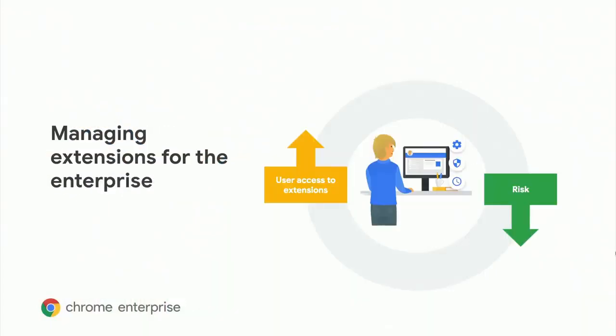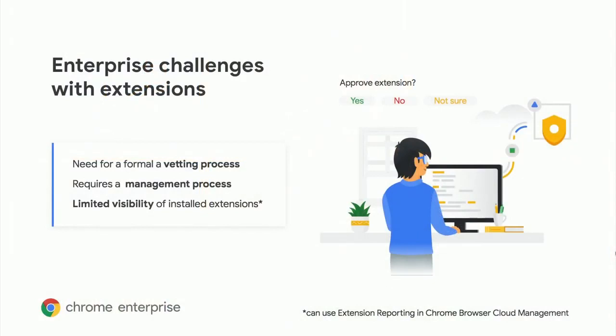With all that data available, organizations are now empowered to make decisions on how to balance user productivity while also mitigating security risks. A great example is managing extensions. There are two primary benefits of extensions for enterprises. The first is customization — users can tailor Chrome's functionality to fit their needs, or enterprises can enforce enterprise-wide browser behavior. The second benefit is productivity — extensions can help users with personal productivity, and enterprises can deploy custom or third-party extensions to enhance their users' experience. However, there are challenges: enterprises need to create a vetting process for extensions requested by end users, and a workflow for IT admins to manage approved extensions. Without extension reporting, it can be difficult to make policy decisions without understanding the possible impacts to users.